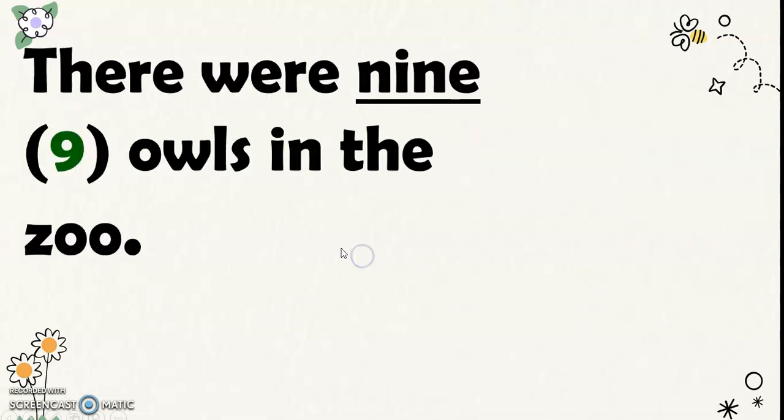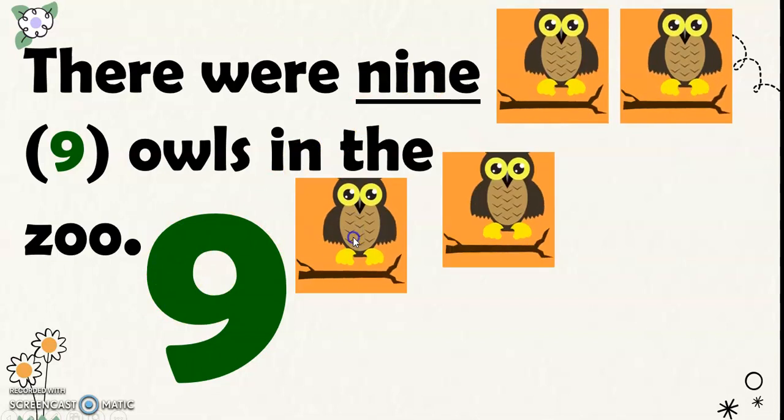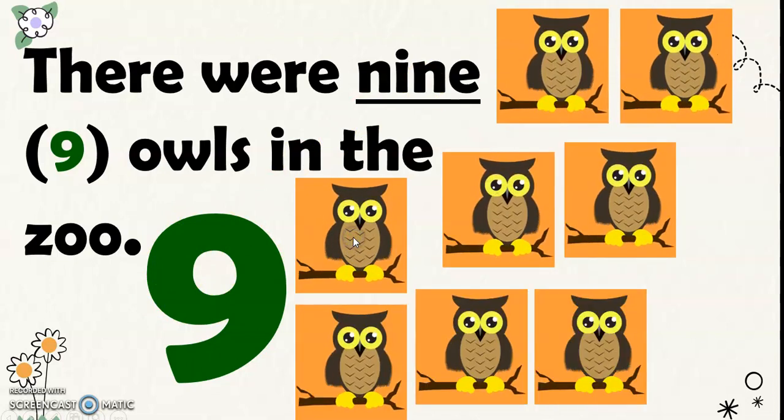Next, there were 9 owls in the zoo. We write 9 this way in word and 9 in number symbol. And these were the 9 owls. There you go.